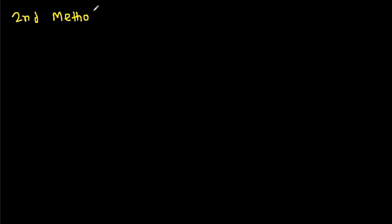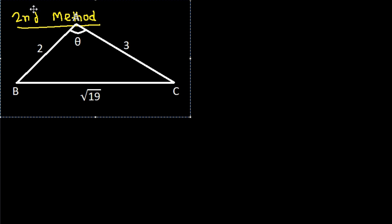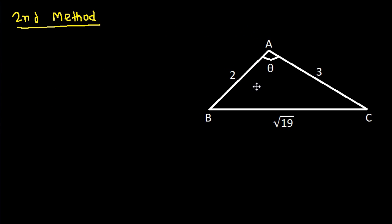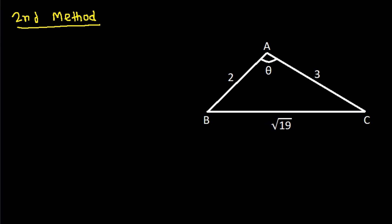And the second method: if we extend CA and take a perpendicular from B to meet the extended line, suppose this point is D, and suppose AD is X and BD is Y.